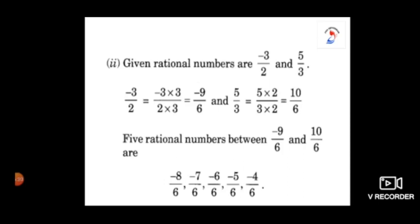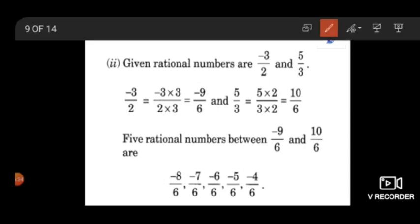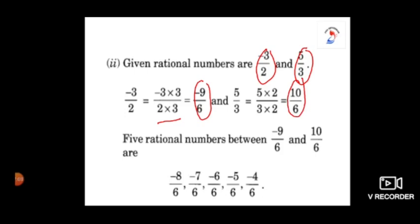It is subdivision 2. The question is: find 5 rational numbers between minus 3 by 2 and 5 by 3. Again, the first step is finding out the LCM. Here, the LCM is 6. So, minus 3 by 2 multiplied by 3 to the numerator and 3 to the denominator will give me the result as minus 9 by 6. To conclude, 5 rational numbers between minus 9 by 6 and 10 by 6 are: minus 8 by 6, minus 7 by 6, minus 6 by 6, minus 5 by 6, and minus 4 by 6. This is the way for finding rational numbers between 2 given rational numbers.